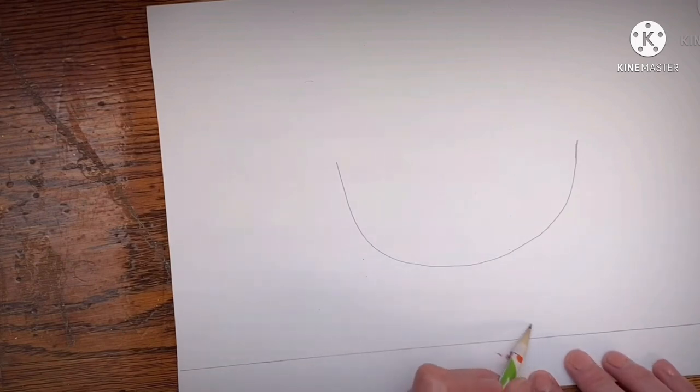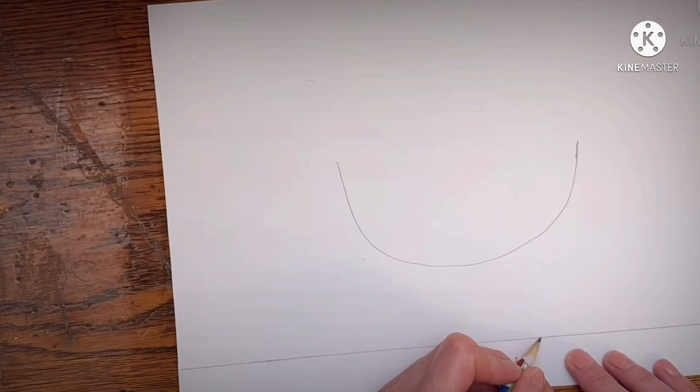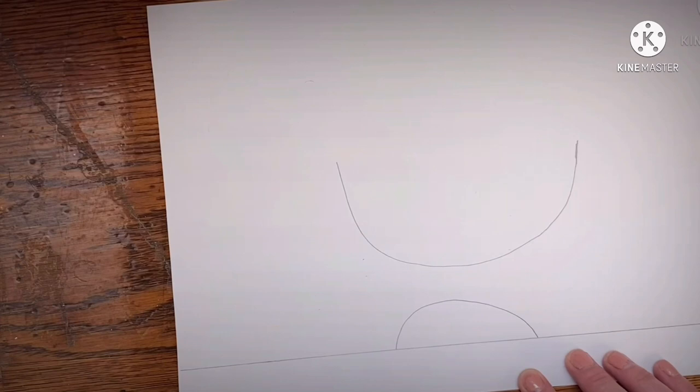Next we are going to draw a smaller curved line or half a circle at the bottom. This is going to be the base for our bowl.